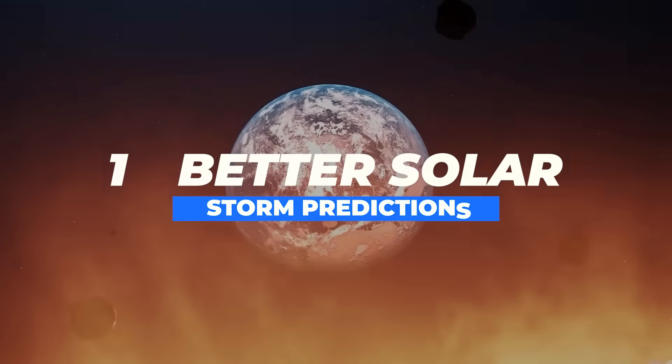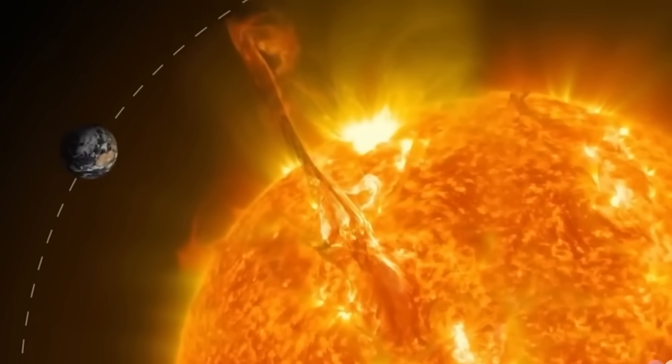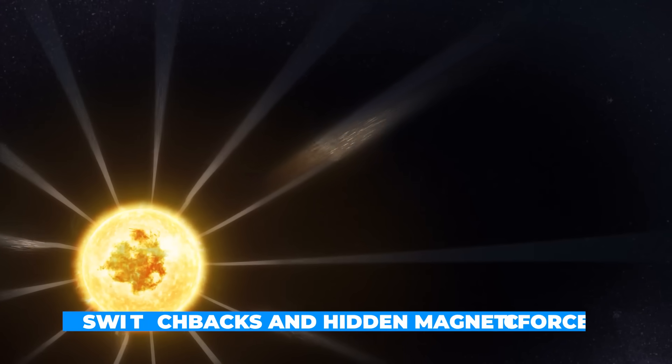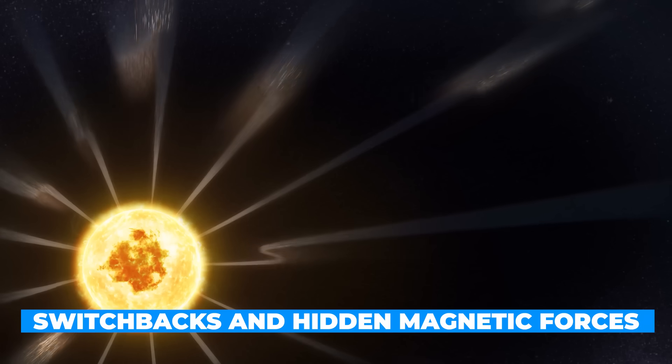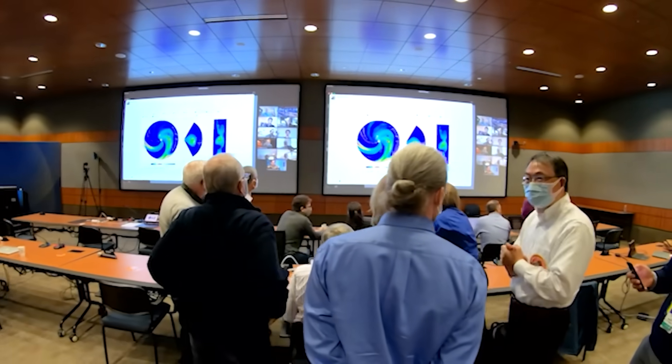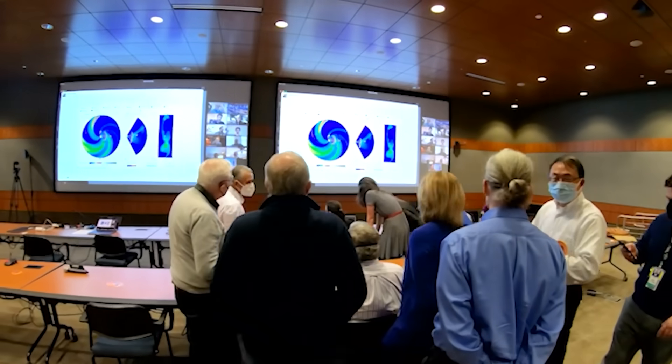One: better solar storm predictions. Solar storms are powerful bursts of energy that can disrupt satellites, knock out power grids, and even affect radio communications on Earth. If scientists can now track and understand the switchbacks and hidden magnetic forces shaping these storms, they may be able to predict them more accurately, giving us time to protect our technology and infrastructure.